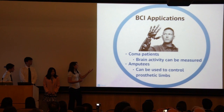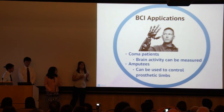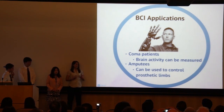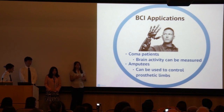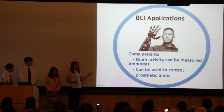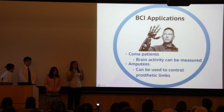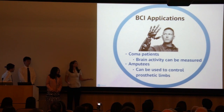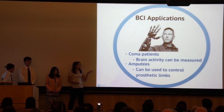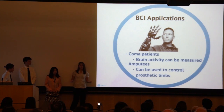As for amputees, as of right now they have very severe limits on the motion of their prosthetic limbs. But with an EEG-based BCI, it can read their intent and their prosthetic limbs will actually move. Recently, some amputees were actually able to pick up a water bottle with a prosthetic arm and drink from it, which is a pretty amazing advancement.